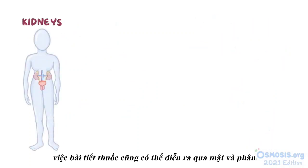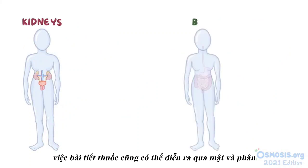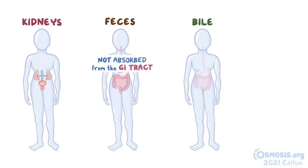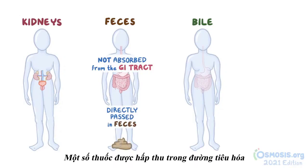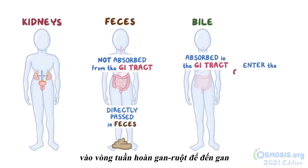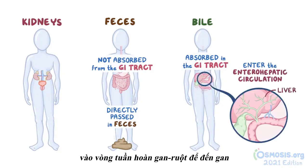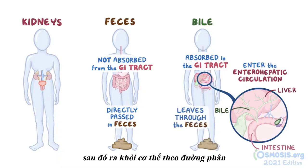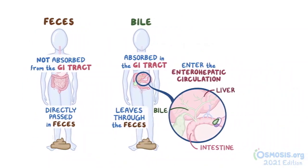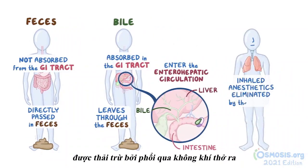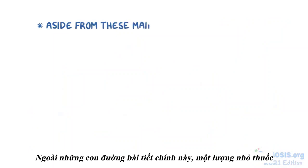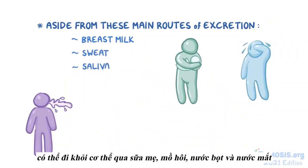Aside from the kidneys, excretion of medications can also take place through the bile and feces. Orally administered drugs that don't get absorbed from the gastrointestinal tract are directly passed in feces. Some drugs that are absorbed in the gastrointestinal tract enter the enterohepatic circulation to reach the liver, where they bind to bile, which is excreted back into the intestine and leaves the body through the feces. Many inhaled anesthetics are eliminated by the lungs through exhaled air. Small amounts of certain medications can also leave the body in breast milk, sweat, saliva, and tears.